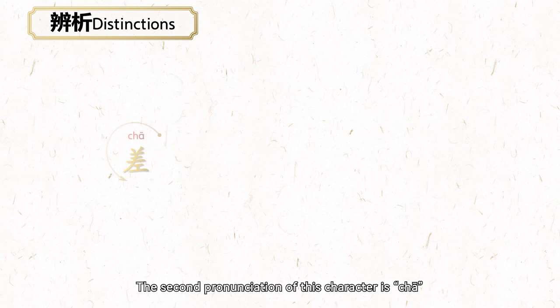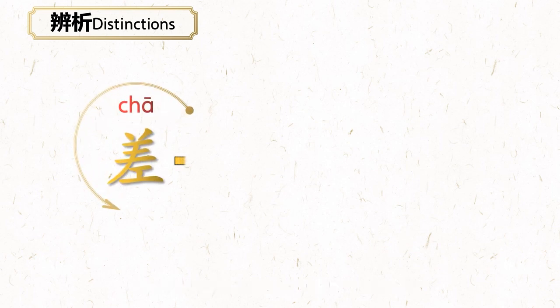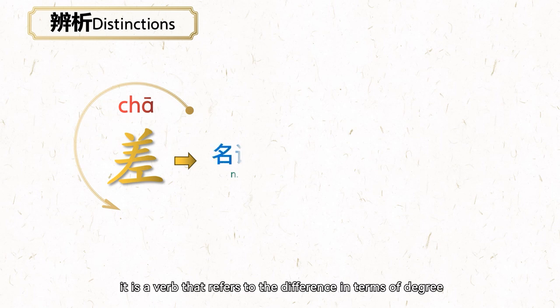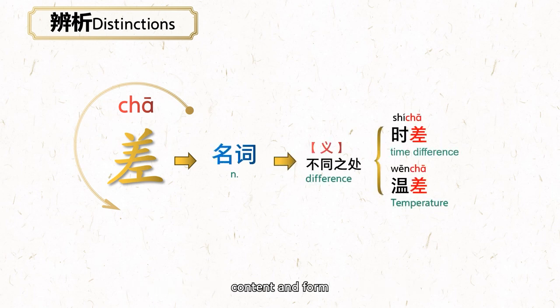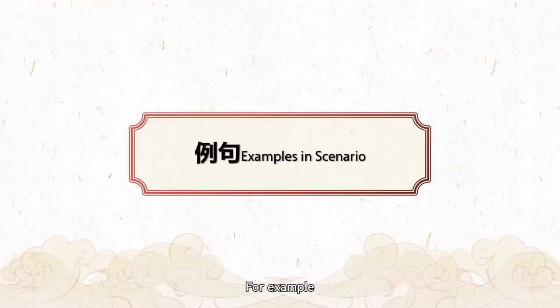The second pronunciation of this character is chā. In this case, it is a verb that refers to the difference in terms of degree, content, and form. It is often used with morphemes as words.